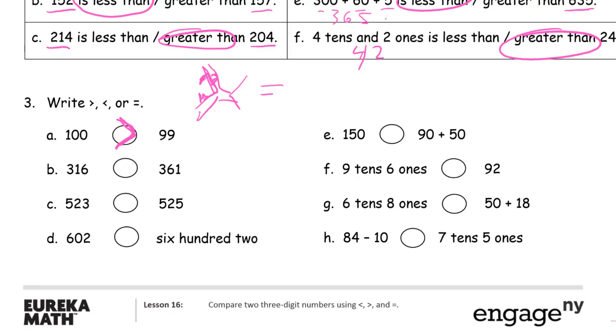So here we have 316 and 361. 361 is the larger number. 523 and 525. 523 is less than 525. And here we have 602. And this says 602. This is in word form. You can tell because it's all words. 602 if you just write this out. 602. They're equal. It's the same number.